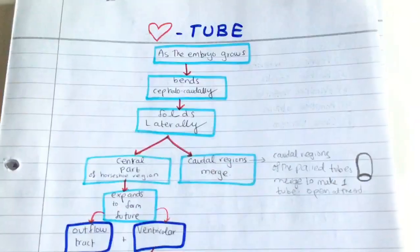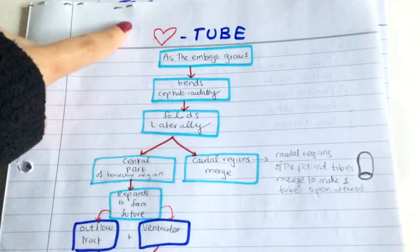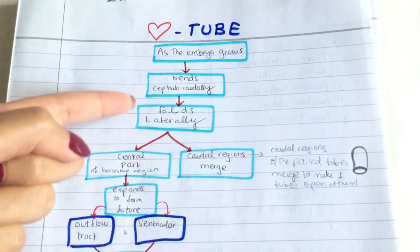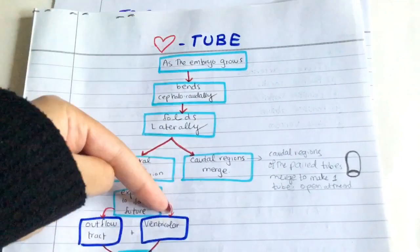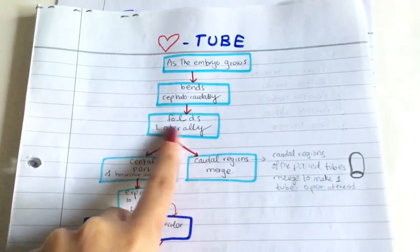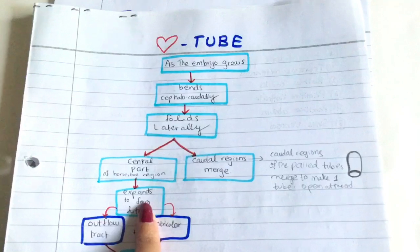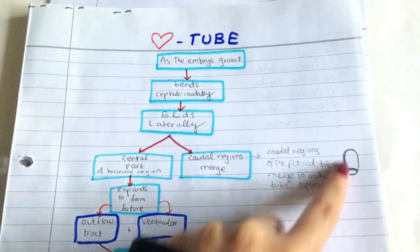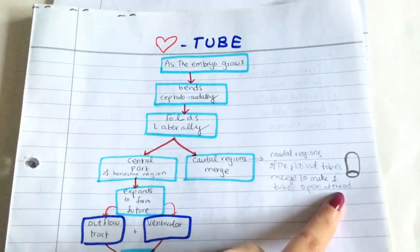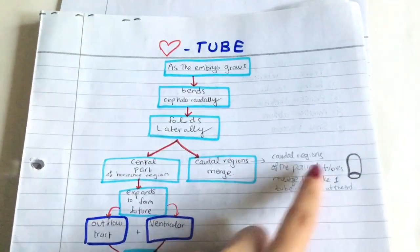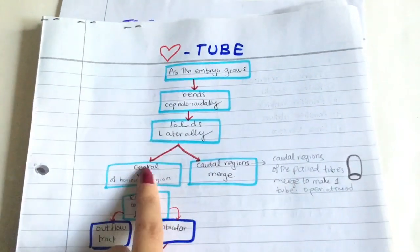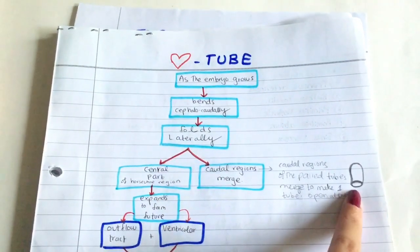Now we have the formation of the heart tube. As the embryo grows, it bends cephalocaudally - from the head towards the bottom - and it folds laterally. A tube is formed which is open on one end. The caudal regions merge, so that is the closed end. The central part, one end remains open.